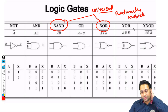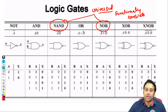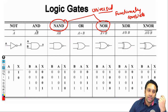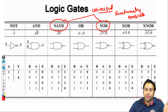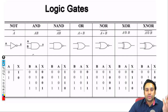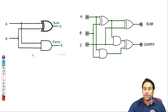Functionally complete का मतलब यह है कि अगर हमें कोई भी Boolean algebra का logic दे दिया जाए, कोई भी digital logic दे दिया जाए, हम सिर्फ NAND gate की help से या सिर्फ NOR gate की help से उस circuit को implement कर सकते हैं. अगर आपके पास only NOT gate हो, only OR हो, या only AND हो — तब आप नहीं कर पाएंगे. That is why they are called as functionally complete.